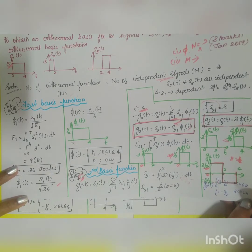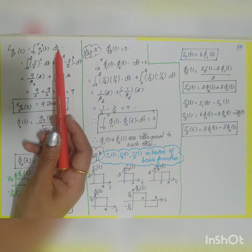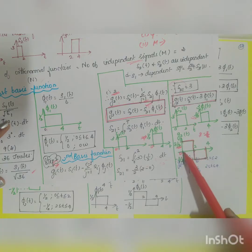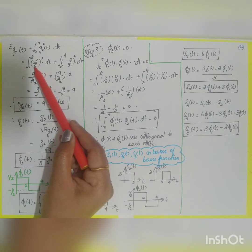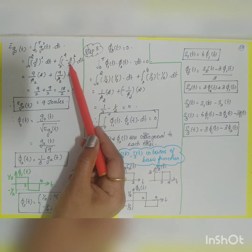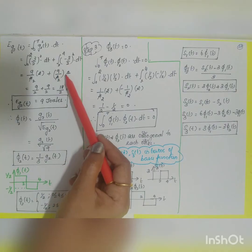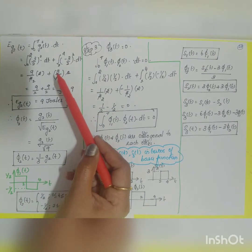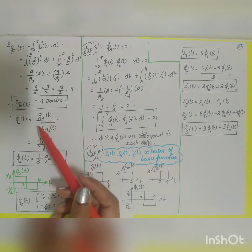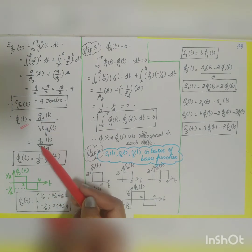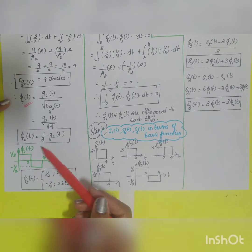Now find φ₂(t) using the energy of g₂(t). E_{g₂} = ∫₀^T g₂²(t) dt = ∫₀² (3/2)² dt + ∫₂⁴ (−3/2)² dt = (9/4)×2 + (9/4)×2 = 9/2 + 9/2 = 9 joules. Therefore φ₂(t) = g₂(t) / √9 = g₂(t) / 3.